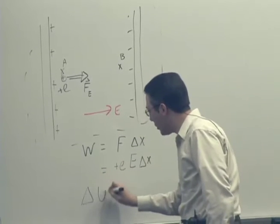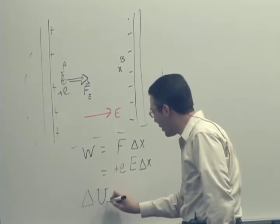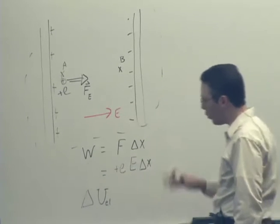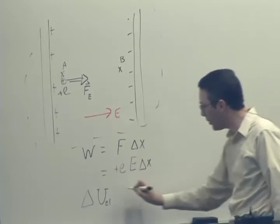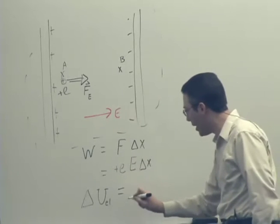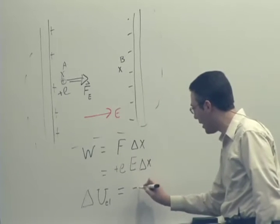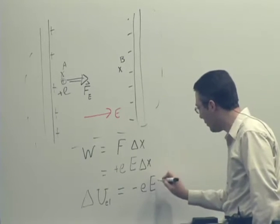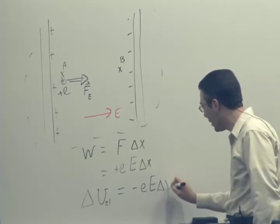If we look at the system of both objects, the change in electric potential energy is the opposite of the internal work. So this would be a change in potential energy of negative e times E times delta X.